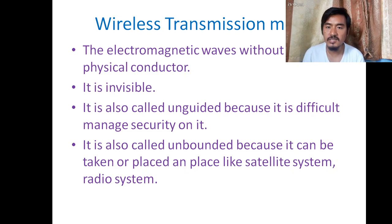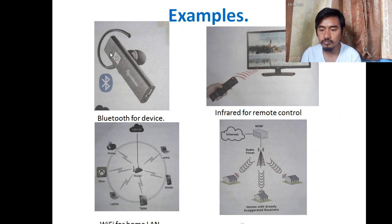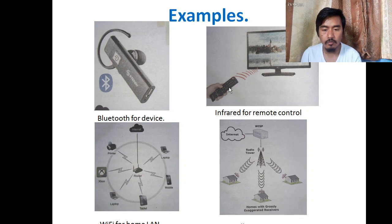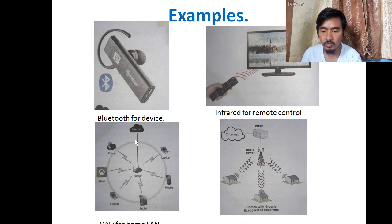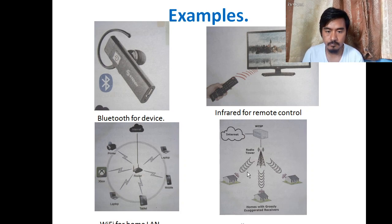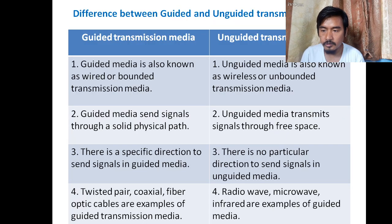Examples of wireless transmission media include Bluetooth, remote control (infrared), Wi-Fi, and satellite systems. With Wi-Fi, you can connect your device to the internet without needing a physical wire.